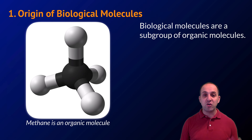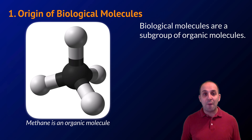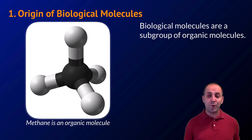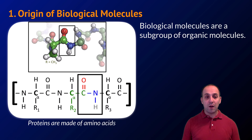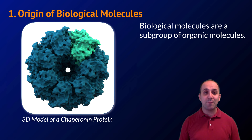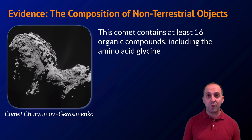Methane is a good example of an organic molecule, but not a biological molecule. Organic molecules are any molecules containing carbon and hydrogen; biological molecules are a subgroup of those. We need to produce biological molecules — there's nothing chemically special about them, but how they're put together is quite unique. For instance, glycine is one of 20 biological amino acids, joined together to make protein chains.